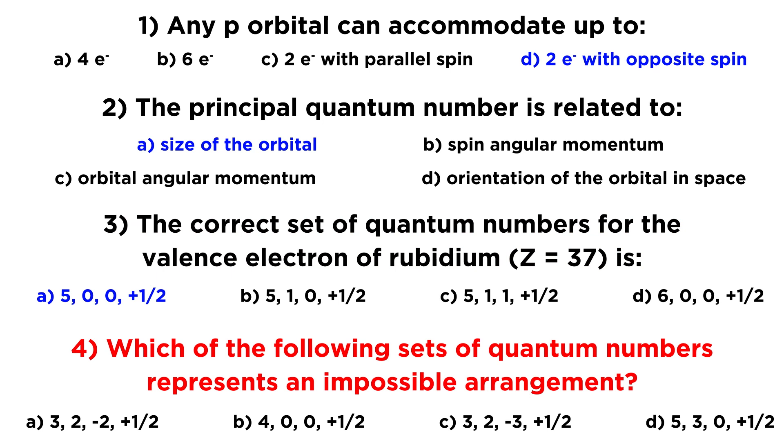And then for this last question, we want to know which of the following sets of quantum numbers represents an impossible arrangement, so let's go one at a time here. We see three, two, negative two, and plus one half. That looks fine, because we are describing a 3d orbital, so we have n equals three, and l equals two, which corresponds to the 3d orbitals, and then negative two is a valid value for m sub l, and then we have plus one half.